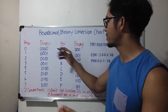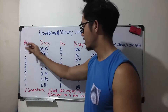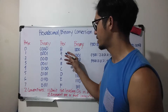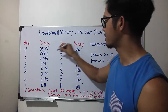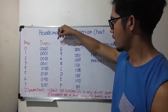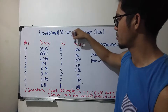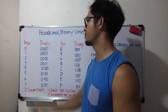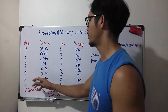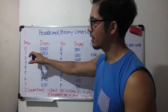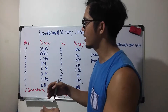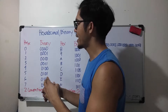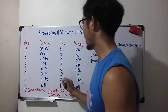So I've got hex and binary columns. The second set of columns — hex and binary — is just a continuation of the first two columns. Hex starts from zero through F.